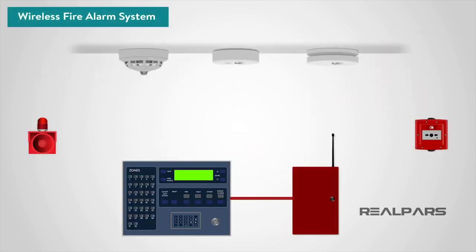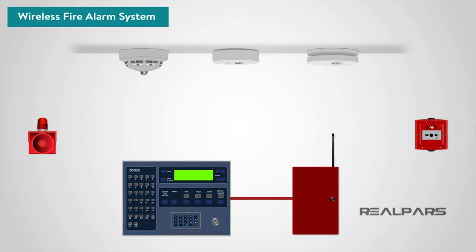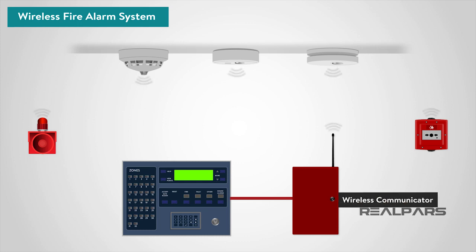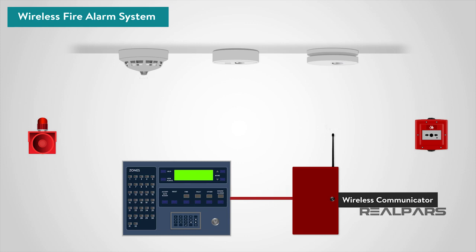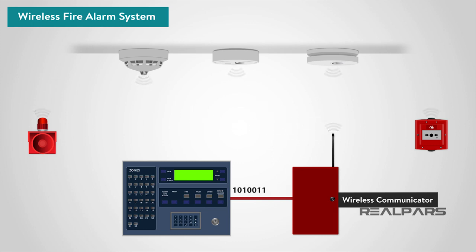The final type of system we will consider is the wireless fire alarm system. These are an effective alternative to traditional wired fire alarm systems for all applications. They utilize secure license-free radio communications to interconnect the sensors and devices with the controllers — a simple concept which provides many unique benefits, and is a full intelligent fire detection system without the need for cabling.